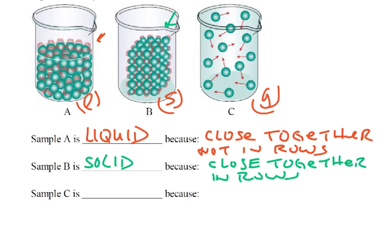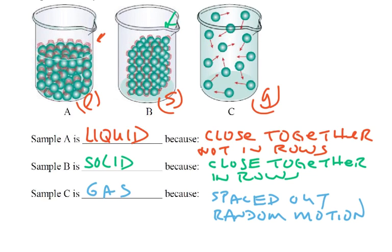The last one here must be a gas. And that's because they have a lot of room spaced out and in random motion, as you know, indicated by all the little arrows that are in there. But again, all of them actually have random motion, but the spacing out of these is really the obvious part.